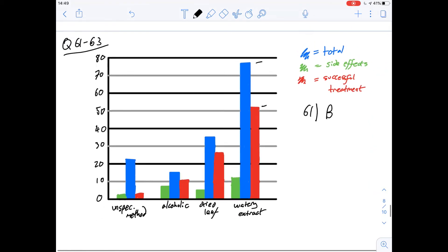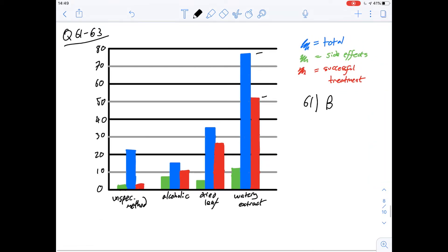So looking at the graph here we're looking at the difference essentially from this point and this point and as far as I can see that's roughly about 25 patients. So the answer to 62 is going to be 25 or B.